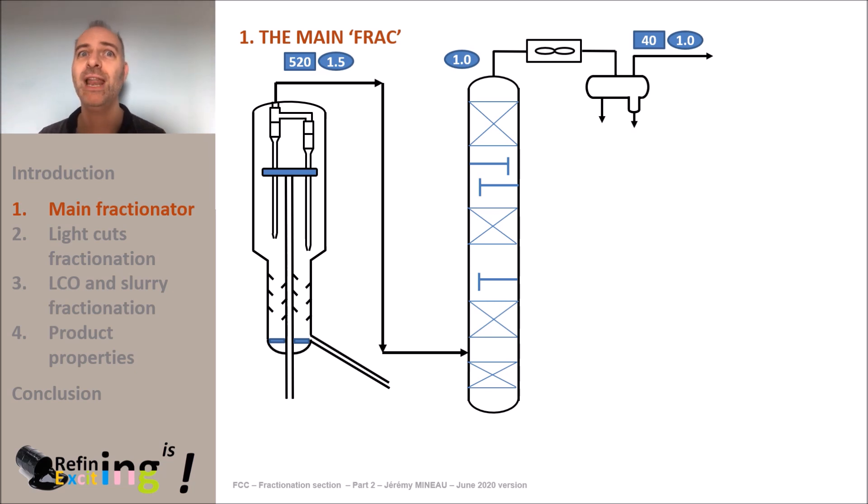So we have a liquid-gas equilibrium in this reflux drum. So inevitably we can find a little gasoline in the overhead gas and a little LPG and fuel gas in the liquid gasoline. We have a so-called imperfect separation.